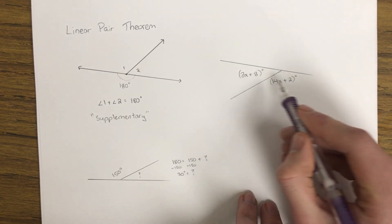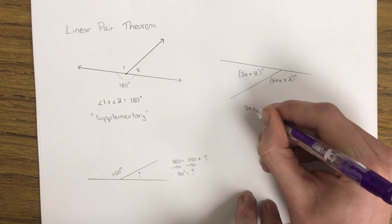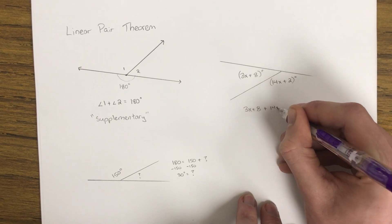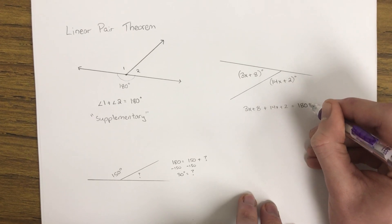So let me say, well I still know these two are supplementary by linear pair theorem. So 3x plus 8 plus 14x plus 2 must equal 180 degrees.